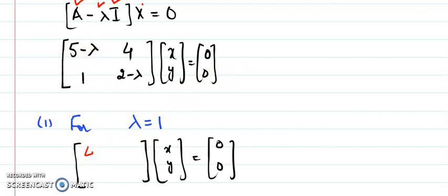Here it is a 4. This 4 is as it is, 1 is as it is, 2 minus 1 is 1. So I got this system.